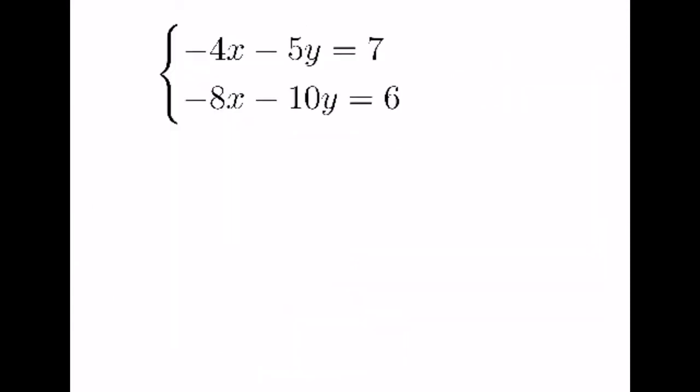Last problem for elimination. We notice that the coefficients do not cancel out if I add straight down. But, if I double the top equation, 4 will become 8 and 5 will become 10. However, if I just multiply by 2, we'll have a negative 8 and a negative 8, which won't cancel out when we add. So instead, we can take this top equation and multiply the entire thing by a negative 2. If we do so, negative 4 times a negative 2 gives us a positive 8x. Negative 5 times a negative 2 gives us a positive 10y. And 7 times a negative 2 gives us a negative 14.